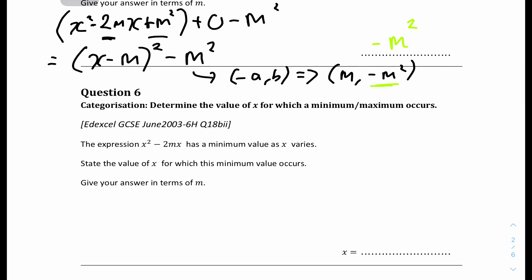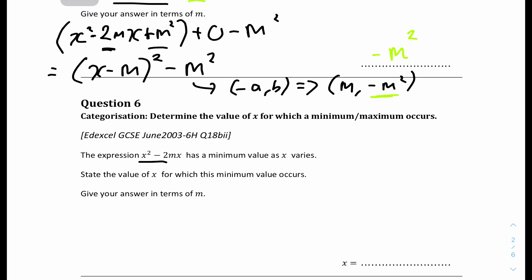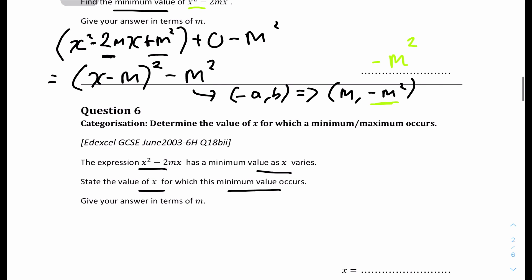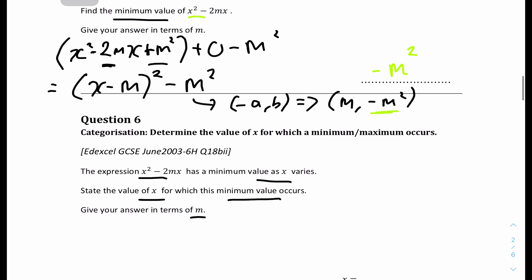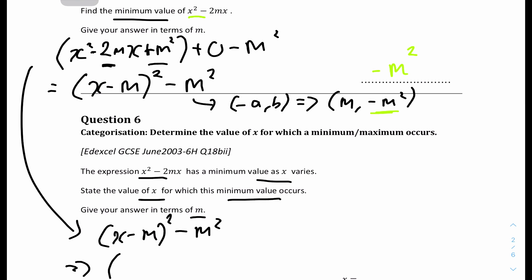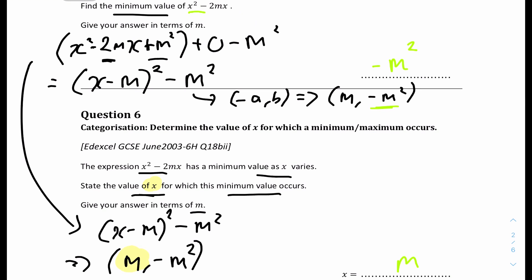Question 6: the same expression x squared minus 2mx has a minimum value as x varies — state the value of x for which this minimum occurs, in terms of m. From the completing the square form done previously: x minus m squared minus m squared. The turning point is minus a, b — which is minus of minus m, so m. Since the question asks for the x value, the final answer is x equals m.